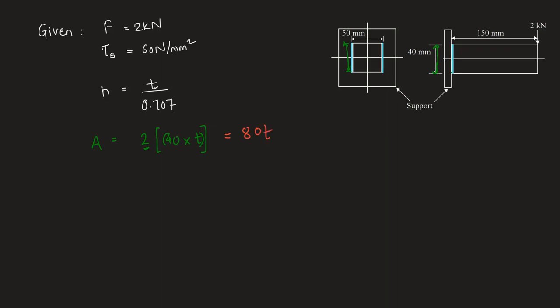Now we need to find out the maximum shear on the beam in order to find out the size of the weld. Because the unknown h is t by 0.707 and once we find t, we can find h.